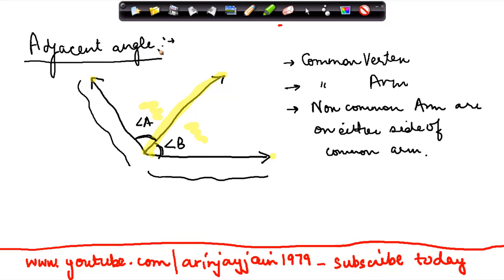So adjacent angles are two angles which have three properties. One, they have a common vertex. Two, they have a common arm. And three, their non-common arms are on either side of the common arm.